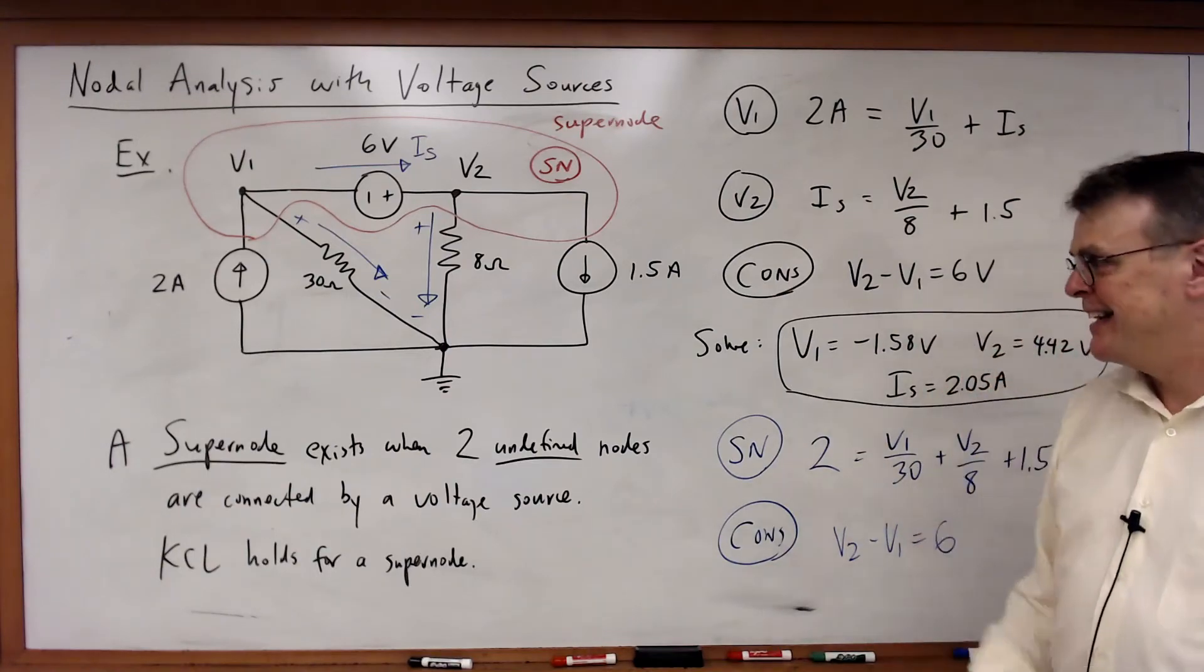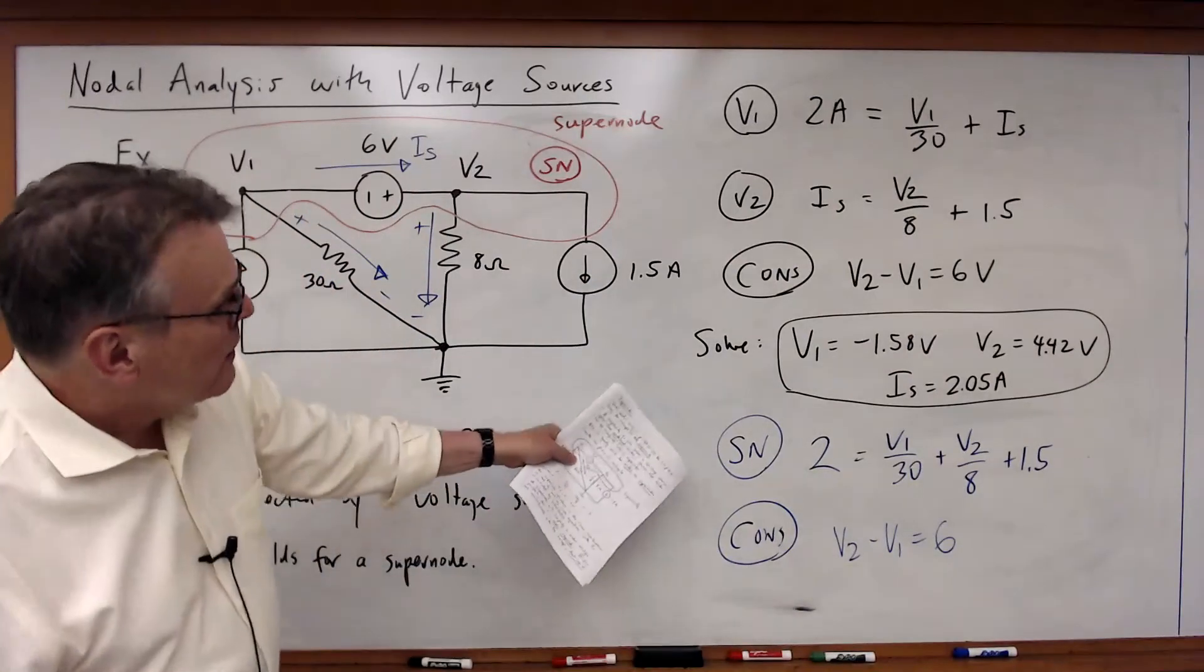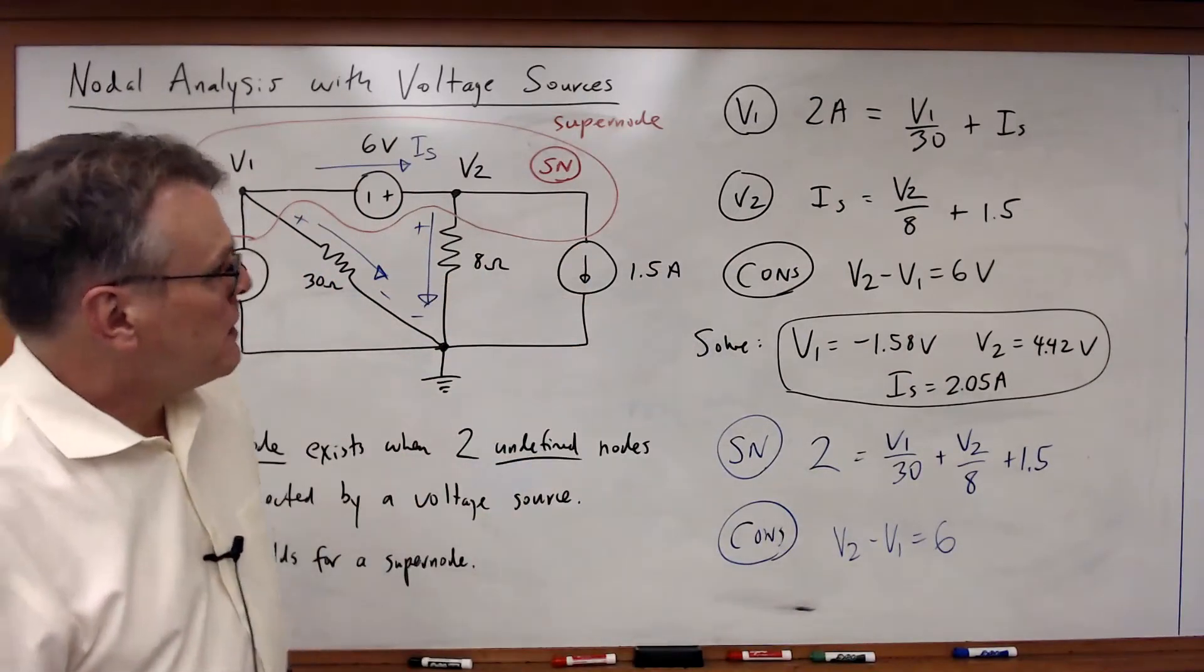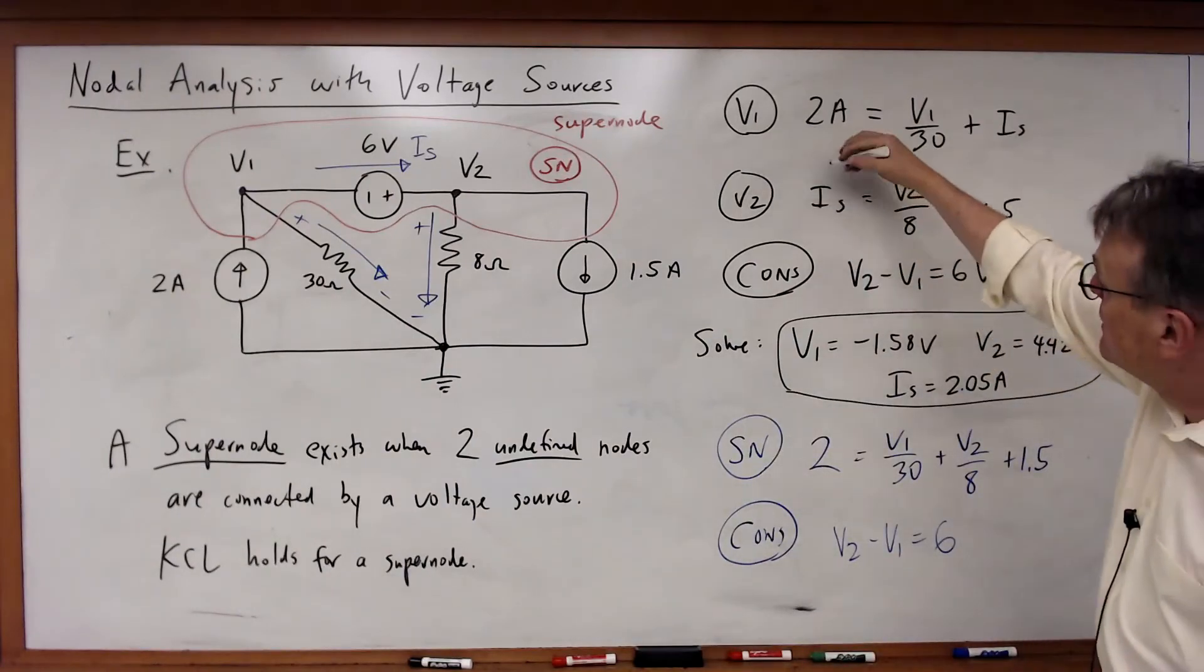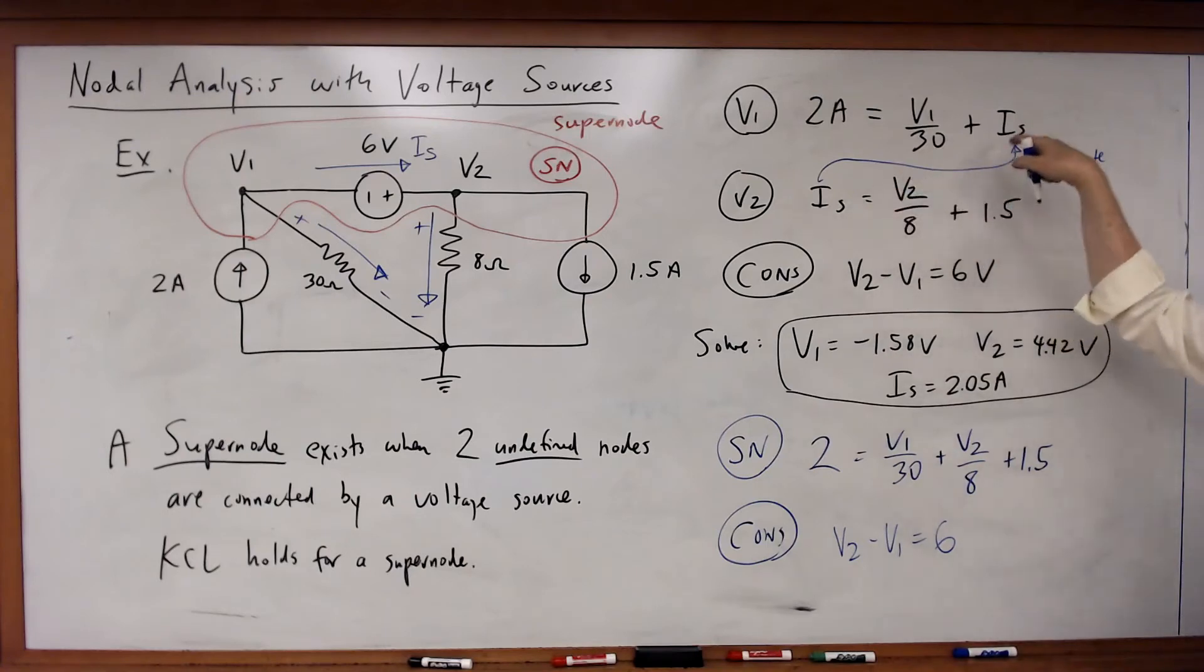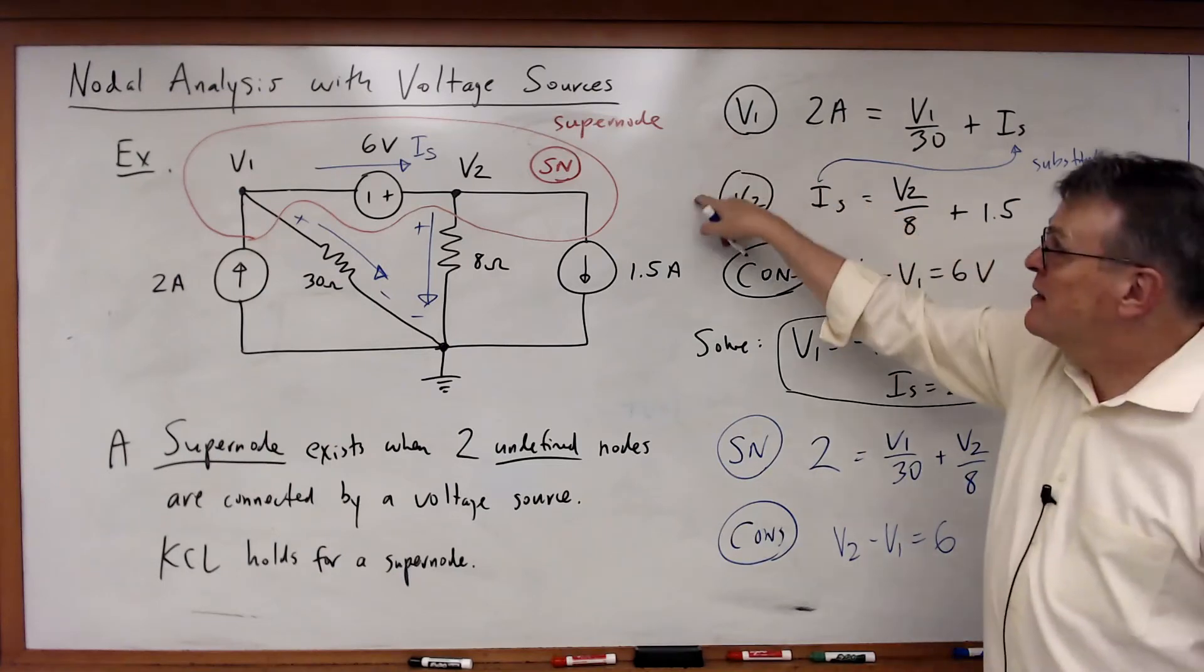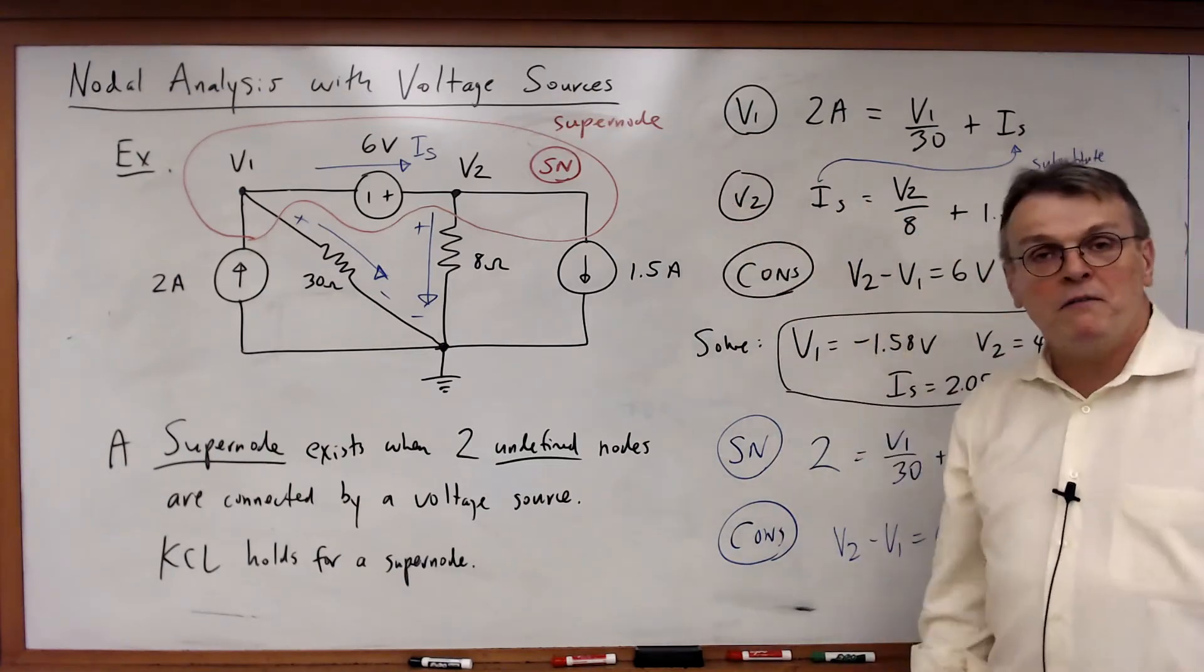Notice what's different. I never use the IS variable. In fact, what is that supernode equation? Well, if you look at this, look at this V1 and V2. If I substitute and eliminate the IS term, then this supernode equation is just the linear superposition of V1 and V2.